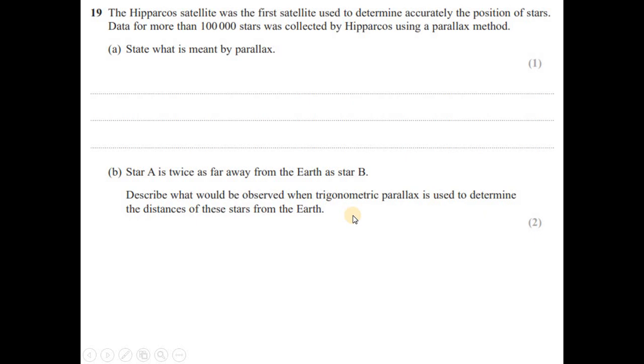The Hipparchus satellite was the first satellite used to determine accurately the position of stars. Data from more than 100,000 stars was collected by Hipparchus using parallax method. It states what is meant by parallax method. So parallax in astronomy, or in general, parallax is apparent change in position of an object due to the background object. A typical definition of parallax. Star A is twice as far away from the earth as star B. Describe what would be observed when trigonometric parallax is used to determine the distance of these stars from the earth.